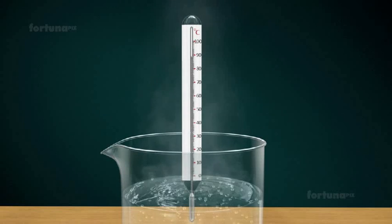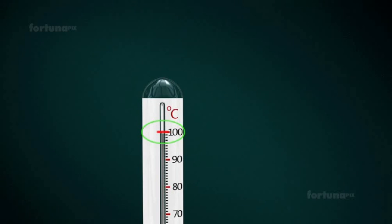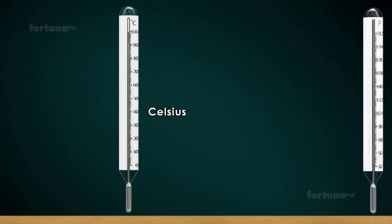The mercury will move up through the tube, stopping at a place which indicates a specific reading on the scale. For common use this scale will be either Celsius or Fahrenheit.